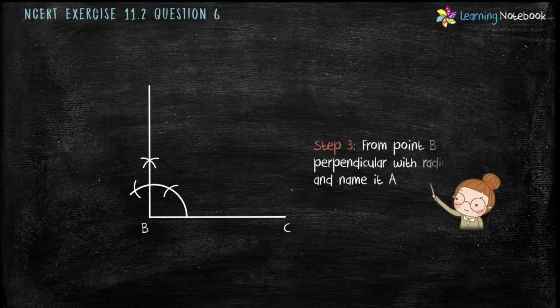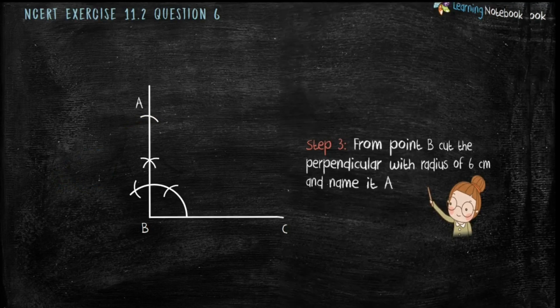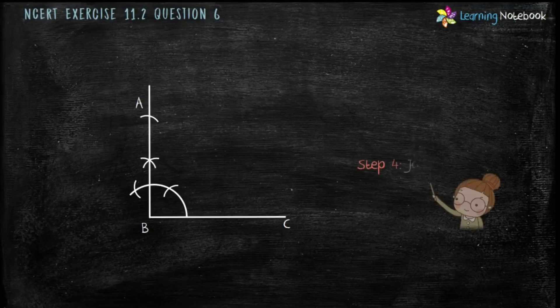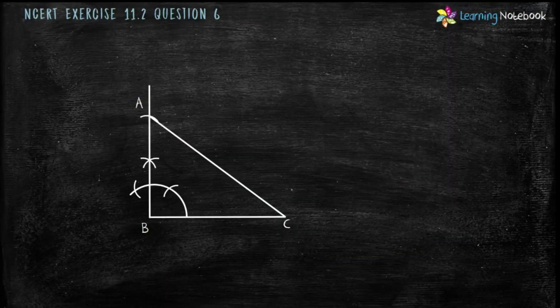Step 3 is from point B cut the perpendicular with radius of 6 cm and name it A. Step 4 is join AC. Now we have drawn a right triangle ABC.